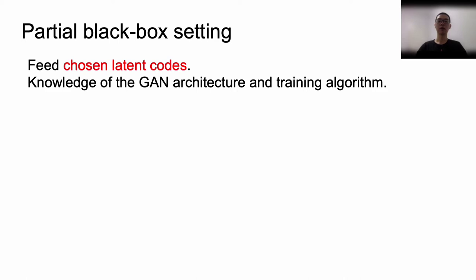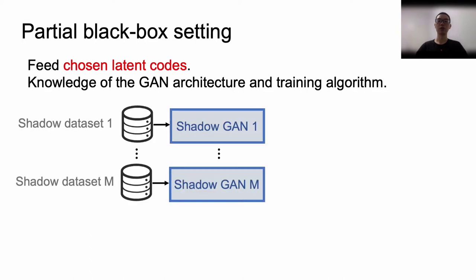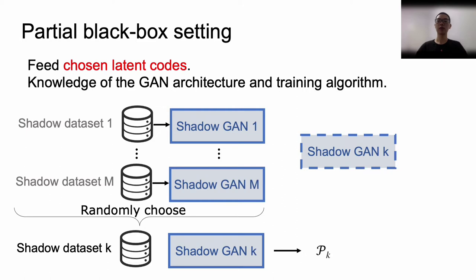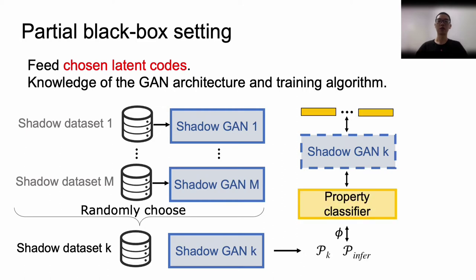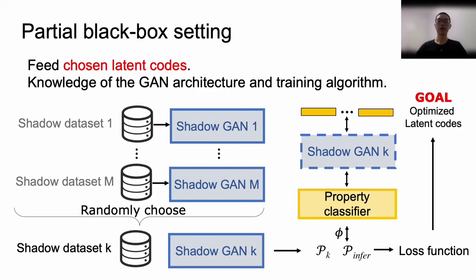Then, in the partial black box setting, we can feed chosen latent codes to the target GAN and collect the corresponding generated samples. Also, we can use shadow models to optimize latent codes. To optimize latent codes, we firstly construct a number of shadow datasets, which are used to train relative shadow GANs, and the shadow datasets should be sampled to fulfill a certain shadow property. Then, we randomly choose a shadow GAN and implement the property inference attack on the chosen GAN. Next, we construct a loss function based on the inference result and the shadow GAN's property. Finally, we optimize the input latent codes based on the loss function and use the optimized latent codes to achieve our partial black box attack.